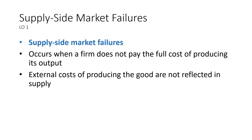Supply side: a supply-side market failure occurs when a firm does not pay the full cost of producing its output. A great example is pollution costs. If a firm doesn't take into account all of the costs of producing a product, even the pollution costs, it will result in a supply-side market failure because all of the costs are not reflected in supply. The firm could produce more electricity and pollution than it would if they paid for the pollution they emitted, because they believe their costs are lower.